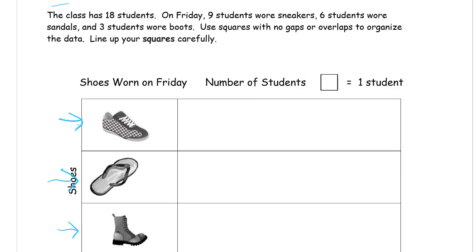Use squares with no gaps or overlaps to organize the data and line up your squares carefully. Here's our key — a square is one student. We want to start here on this line as our endpoint for all of these and make a train of cubes in our picture. Try to make the squares the same size; they don't have to be perfectly the same as the printed one, but they should all be the same size as each other.